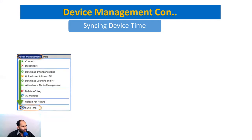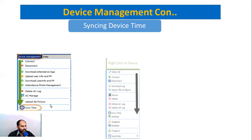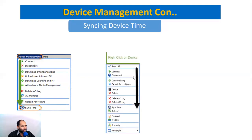You can go to Device Management and select Sync Time if you want to sync the time with the software installed on your PC. Simply go to Device Management and select Sync Time. Make sure your device must be connected before syncing time.